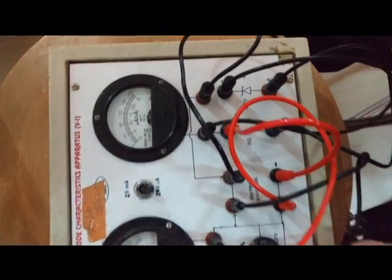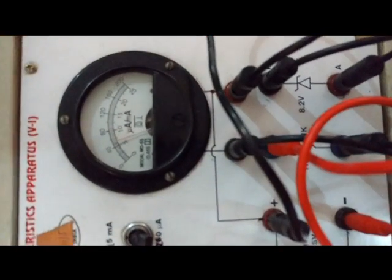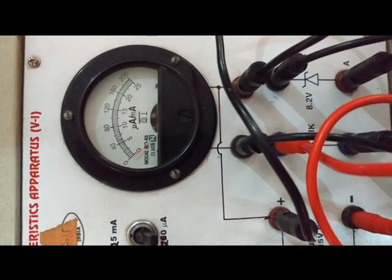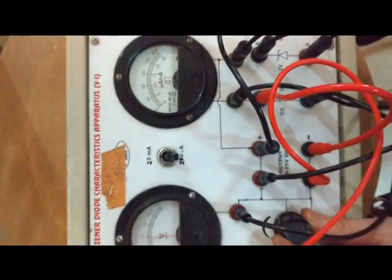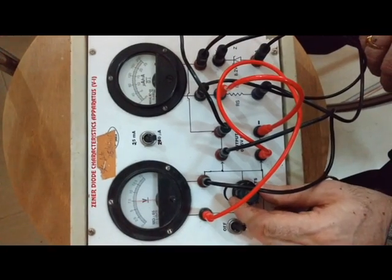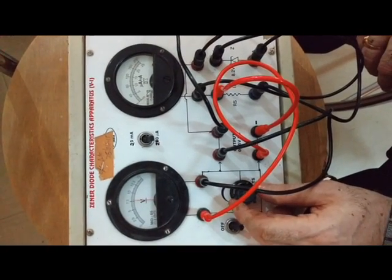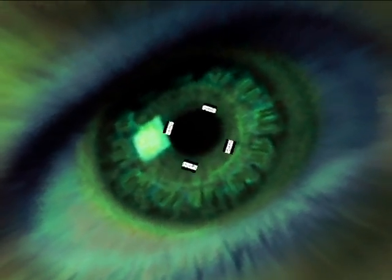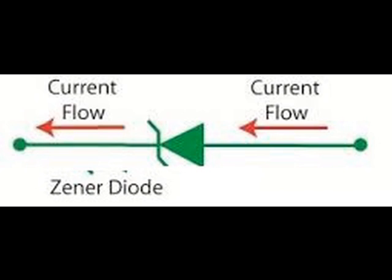In microampere, the current goes out of limit once it crosses the breakdown voltage, but if it is in milliampere, then the current remains within limit. So this is how we get the characteristics of the Zener Diode. Thank you very much.